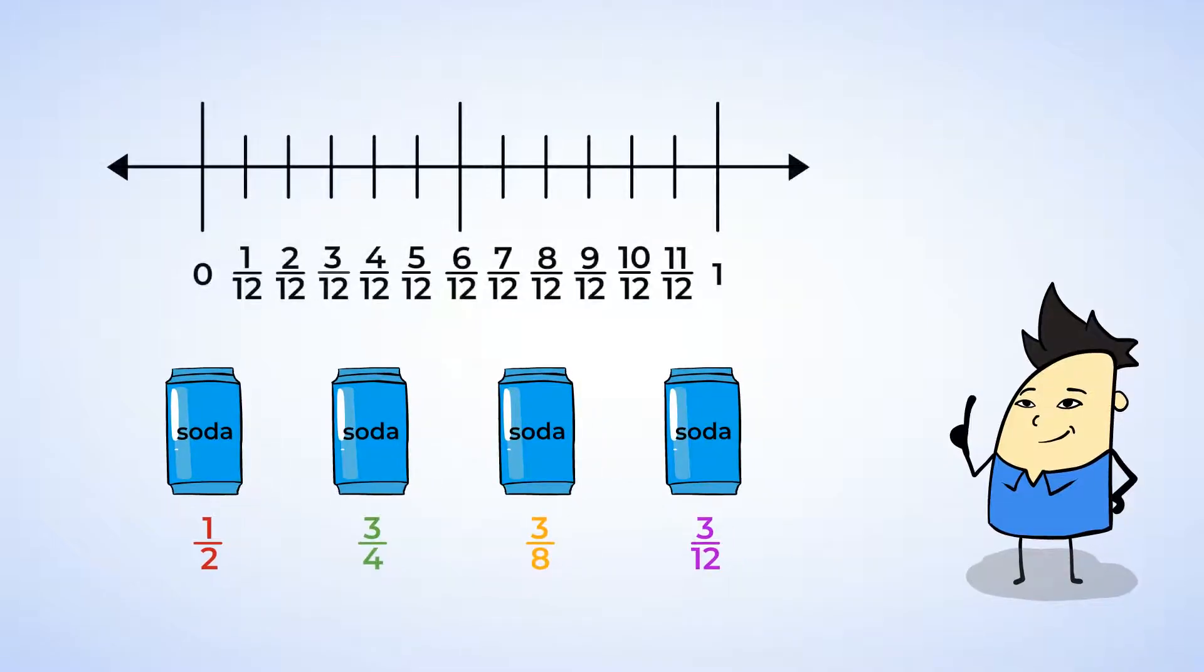And just one last one. The can that's three-twelfths full goes right here on the number line. And when dealing with twelfths, half of twelve is six. So we know that one-half is equivalent to six-twelfths. And three-twelfths is definitely less than one-half. And this means that one-half is greater than three-twelfths.